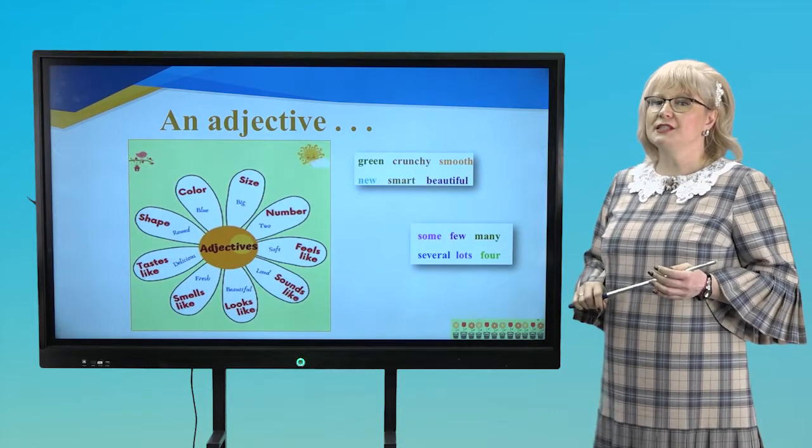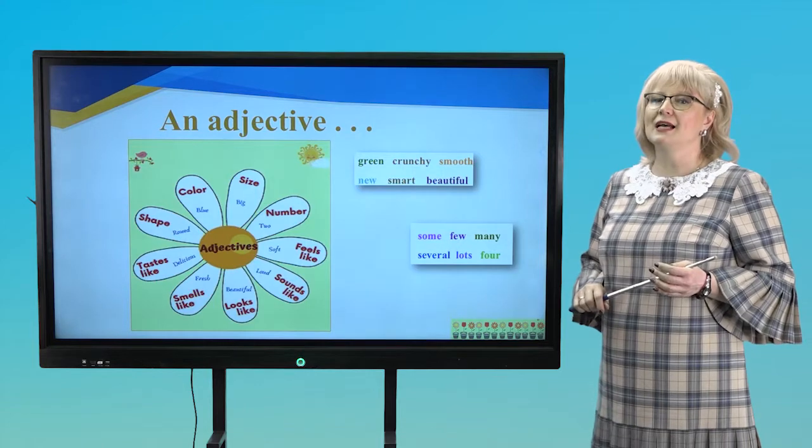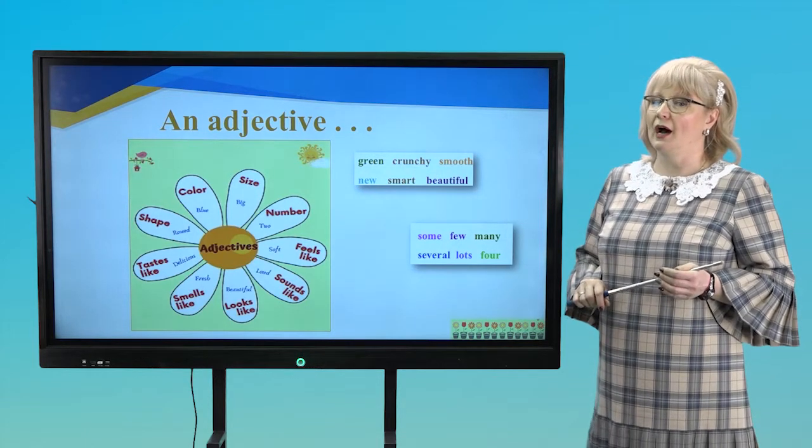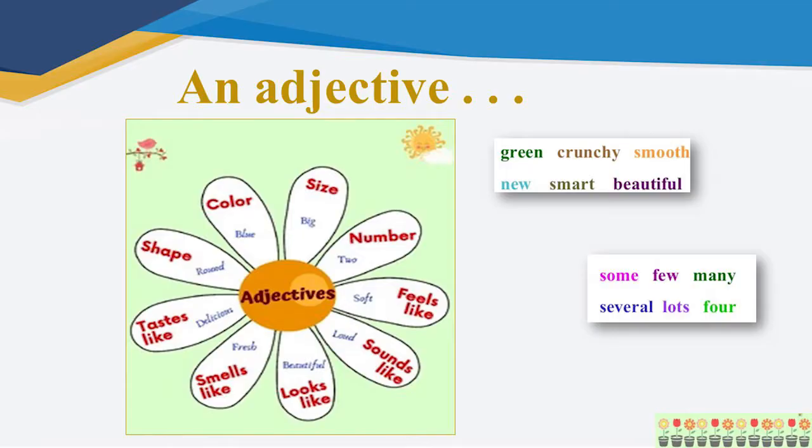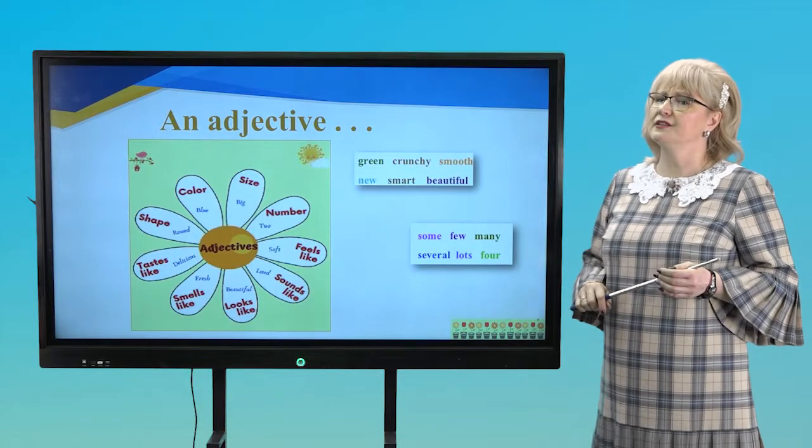Ok, what is an adjective? What does the adjective mean? Adjectives are words which describe color, size, shape, feels, taste, sounds and others.